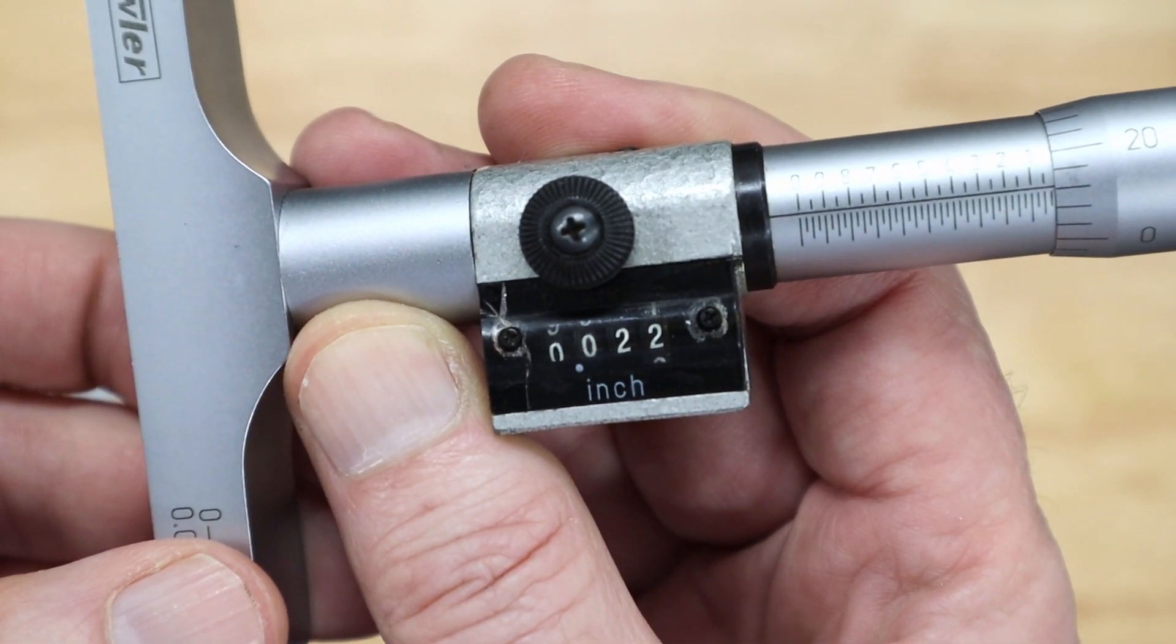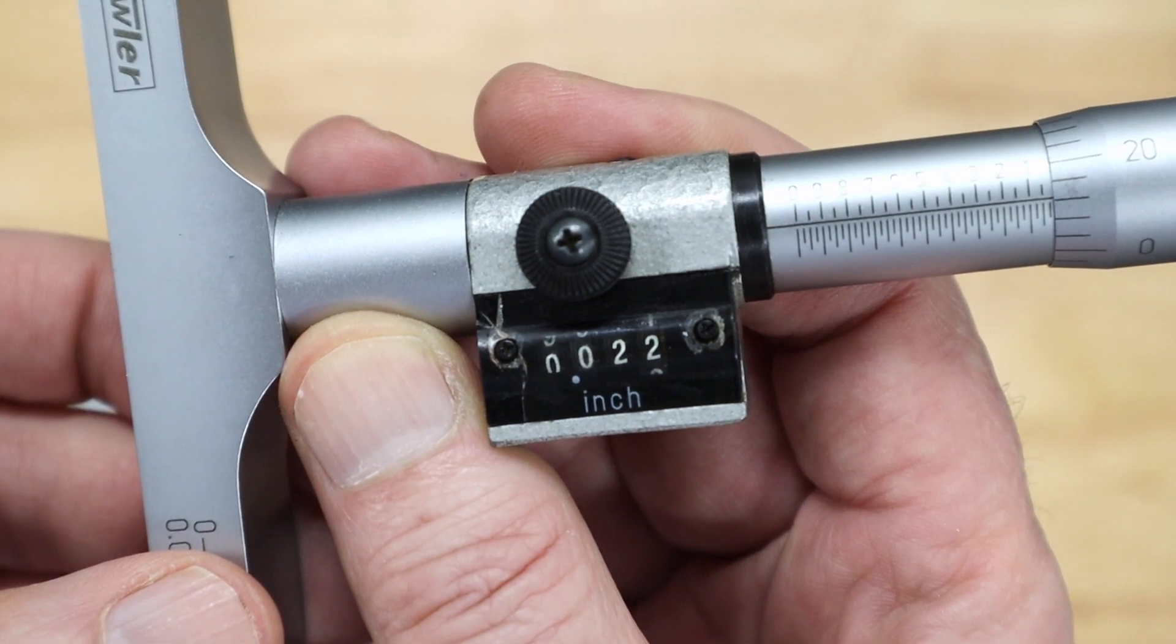We'll head to the computer now and I'll explain why it's off by this amount. I created a 3D model of the Haimer tip and went to more effort than really needed to create it. But, you know, it's kind of fun.